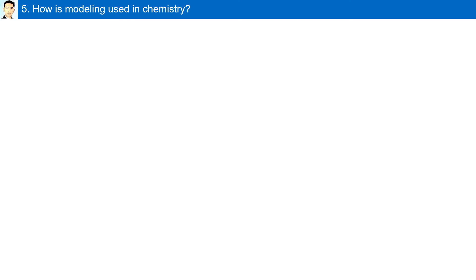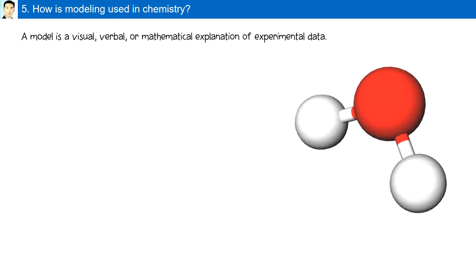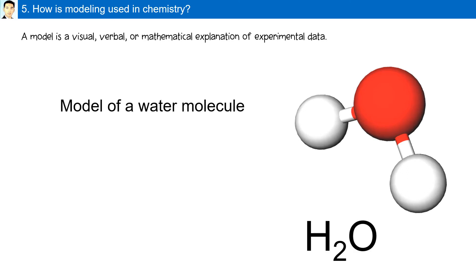How is modeling used in chemistry? A model is a visual, verbal, or mathematical explanation of experimental data. For example, the model shown is a model of a water molecule. The hydrogen atoms are 104.5 degrees apart from each other in a water molecule, roughly making a shape of a V with the oxygen shown in red.